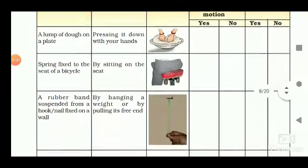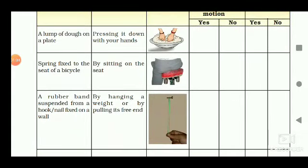Next, a spring fixed to the seat of a bicycle. By sitting on the seat, we have seen that the spring gets compressed — that means the shape of the spring gets changed. A rubber band suspended from a hook or nail fixed on a wall: by hanging a weight or pulling its free end, we have seen it expand — that means there is a change of shape.